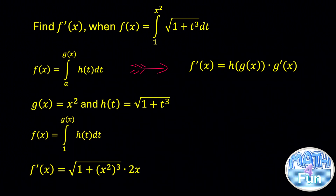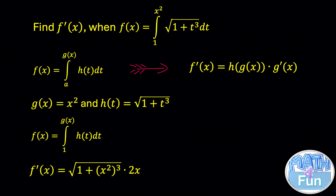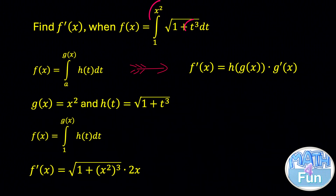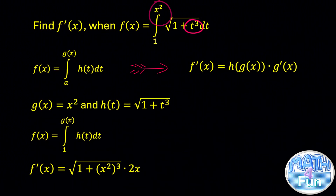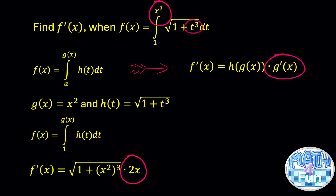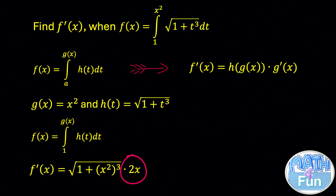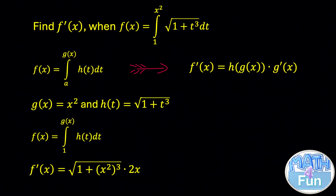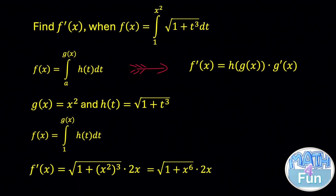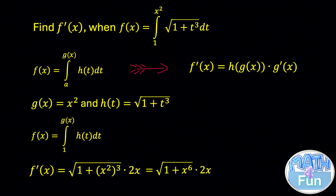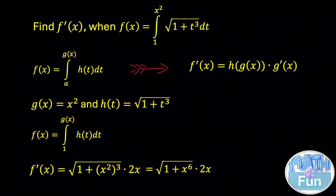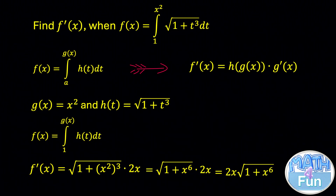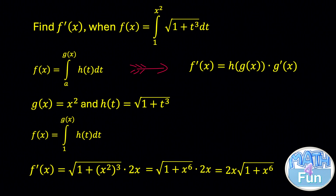We can write it equal to radical 1 plus x squared cubed — replacing x squared instead of t — times the derivative of x squared, which is g prime of x. The derivative of x squared is equal to 2x. Simplifying, you get radical 1 plus x to the power of 6 times 2x, which is equal to 2x times radical 1 plus x to the power of 6.